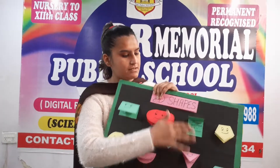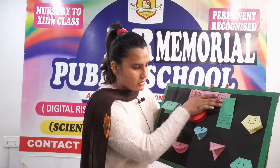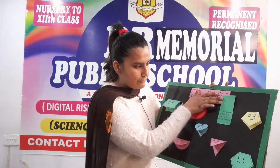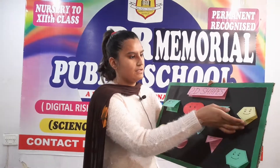Next one is square. I am square. I have 4 equal sides and 4 equal vertices.